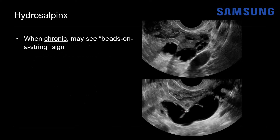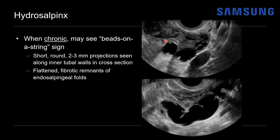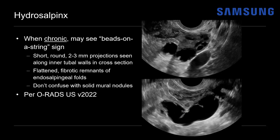When chronic, we may see the beads-on-a-string sign — short, round 2-3 mm projections along the inner tubal wall seen in cross-section, corresponding to flattened fibrotic remnants of the normal endosalpingeal folds. Don't confuse these with solid mural nodules in ovarian neoplasms; these are much smaller at 2-3 mm and often uniformly spaced. Per ORADS, no additional imaging follow-up is specifically recommended for simple hydrosalpinx; management follows gynecologist recommendations based on symptoms and clinical history.